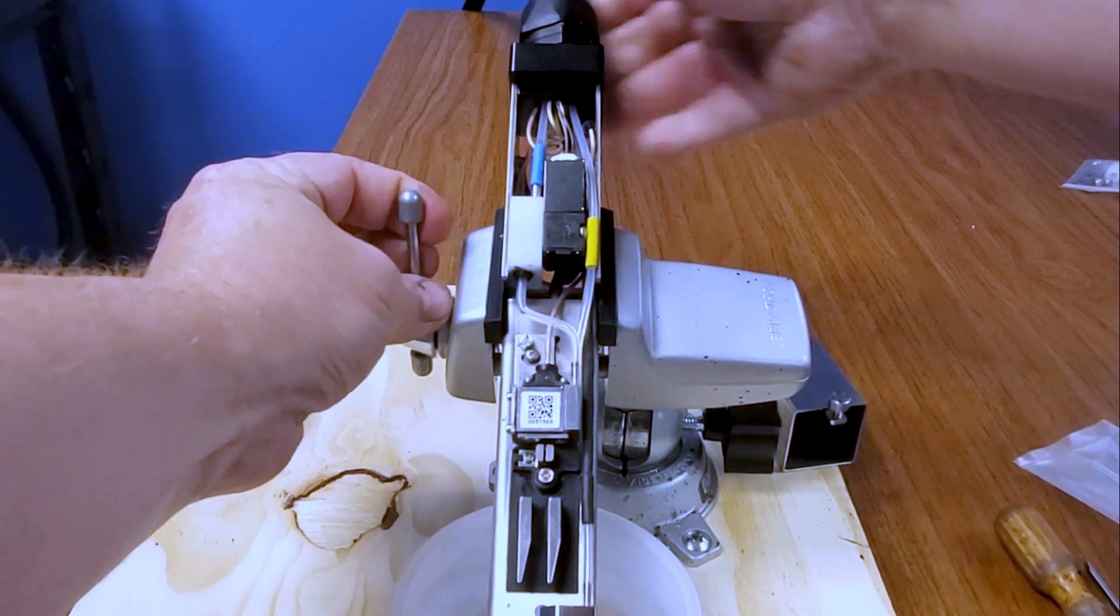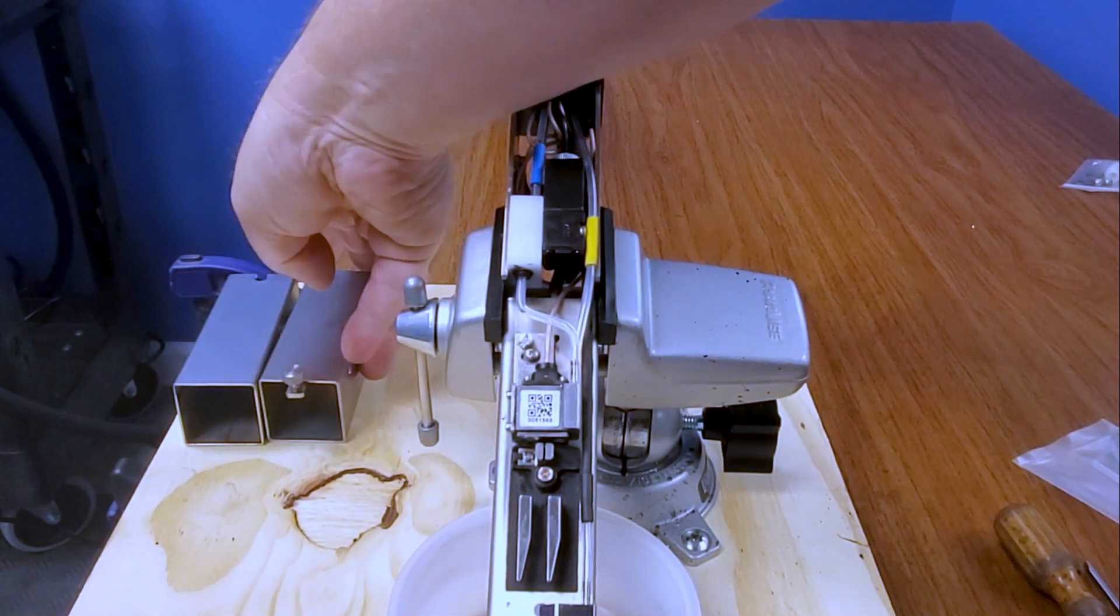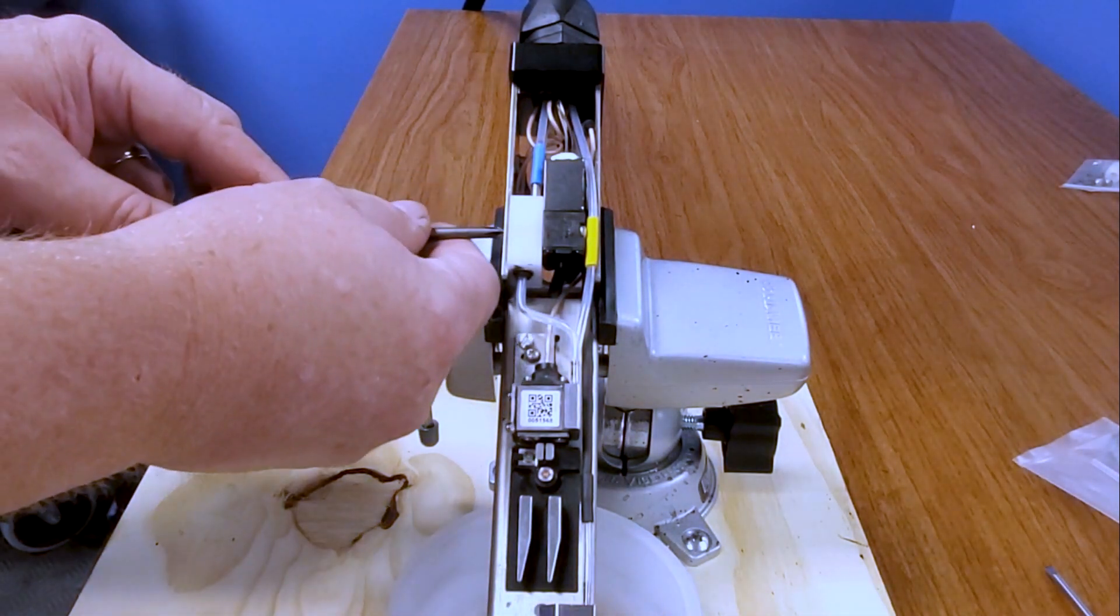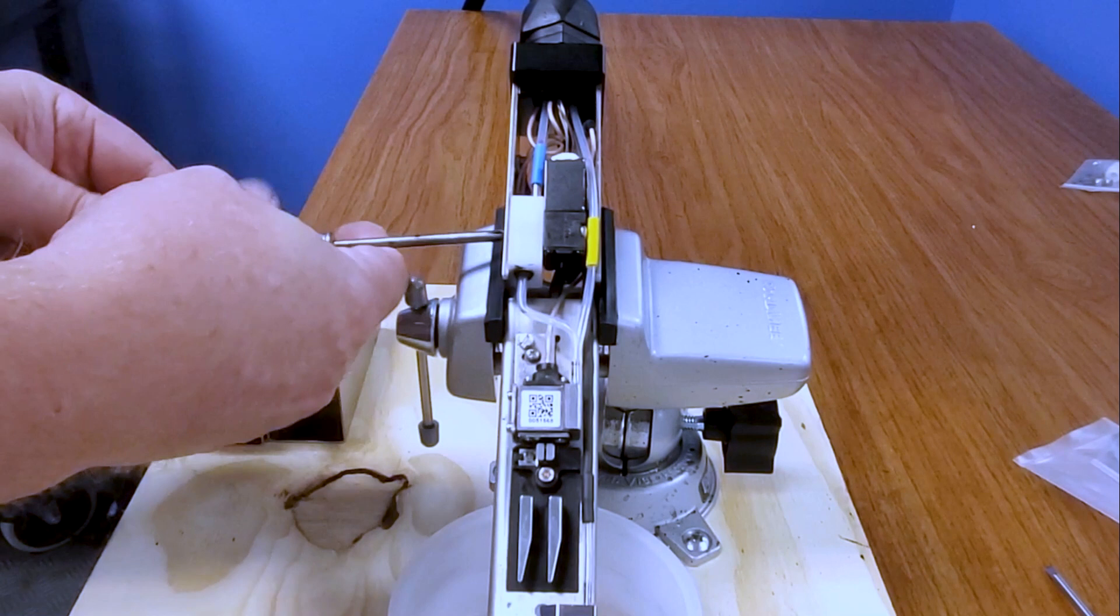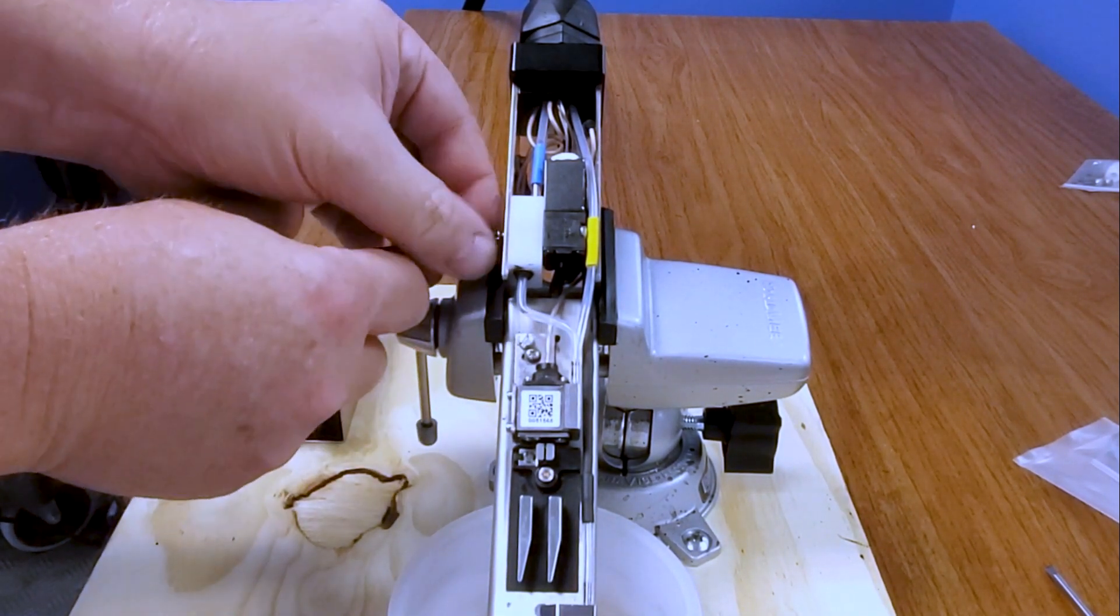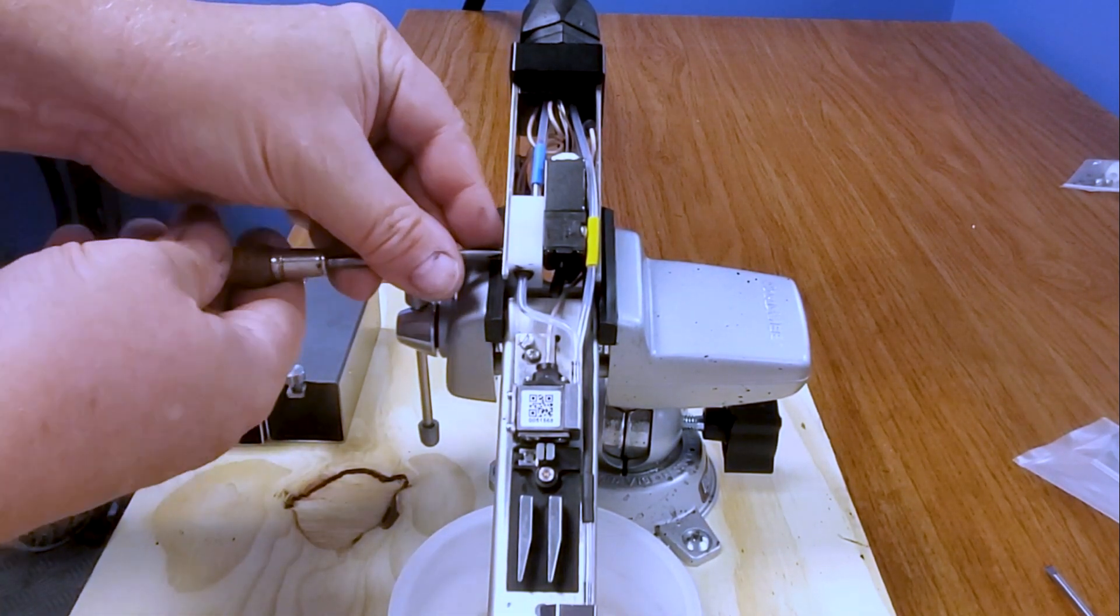I go ahead and put the printhead back into a vise. Next, I will be removing the two screws from the printhead manifold or the white block here. These screws are a little bit longer than the other ones, so again, I keep them all separated.